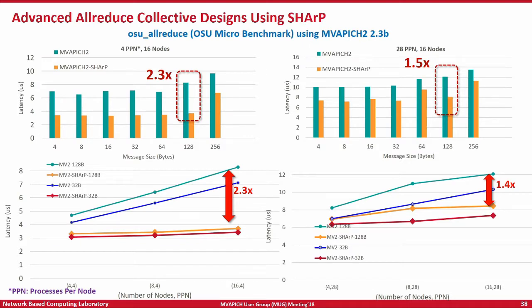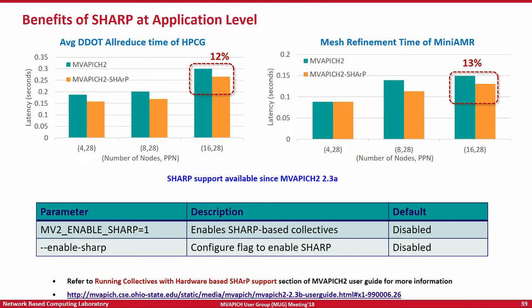These are some benefits you can get at application or microbenchmark level using the new SHARP-based collective. SHARP is basically network offload, as introduced in earlier talks — your reduction happens in the network. You get significant performance benefits for small to medium sized messages using the current version of SHARP. This is how you can enable SHARP at configure time and runtime in MVAPICH2.